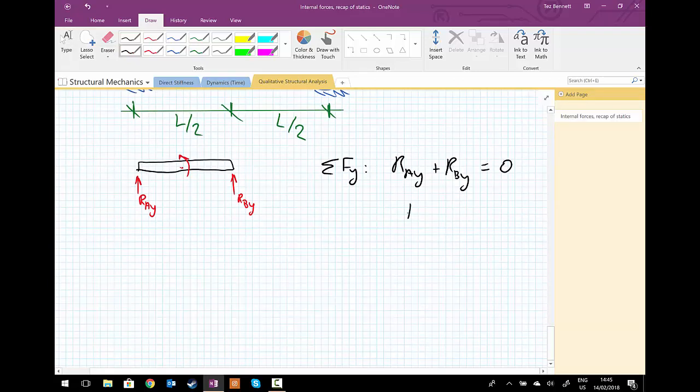Or you could rearrange it if you'd like, but RAY must be equal to minus RBY.